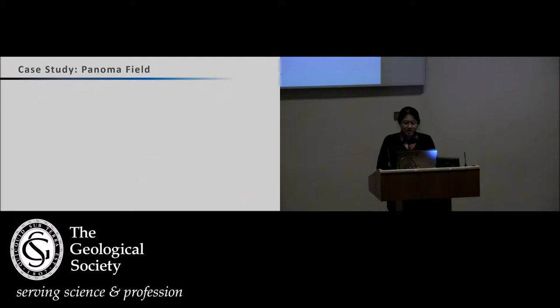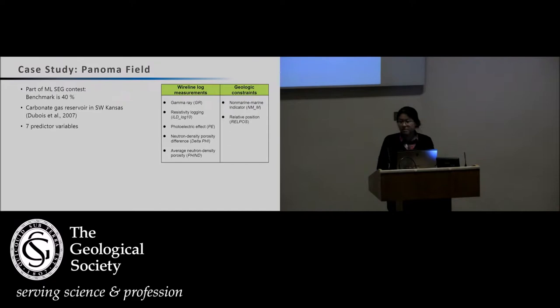This project is part of the SEG machine learning contest last year. One of the winners, actually the number one winner, is sitting here: Lucas Moser from Imperial College. The field area is a carbonate reservoir in southwest Kansas, and more information can be found in this 2007 paper. The data set has seven predictor variables, or in machine learning terminology, feature vectors, based on five wire line logs and some geologic constraints ground truthed by core observations. The data is a multi-class classification problem with about 10 wells. Yes, they are relatively small data compared to what we've seen, but we always have to remember to start small and increase complexity and volume from there.